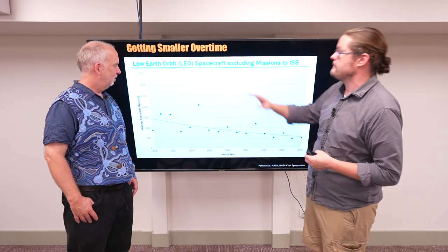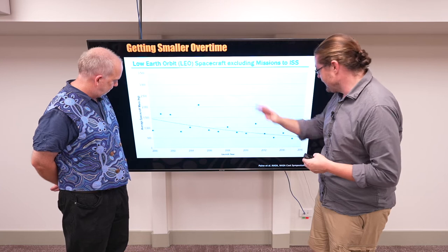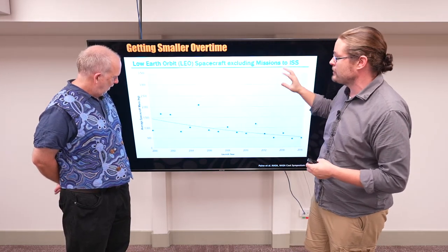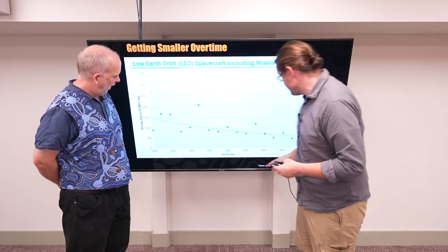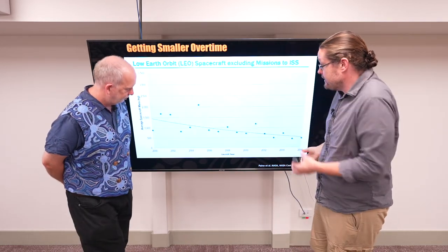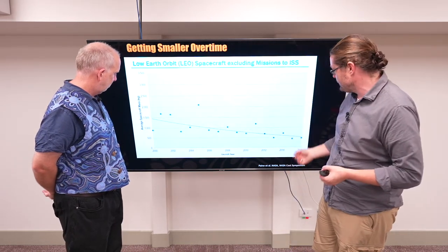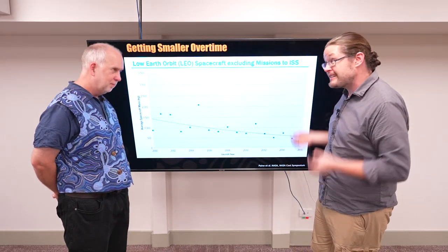And in fact, if you look just even over time, this is a nice NASA plot where you just average per year, what is the average satellite, not just going to the ISS? And even in a 15 year span, it is getting smaller from on average 12 to 1300 kilograms to about 500 kilograms. That's actually a lot.